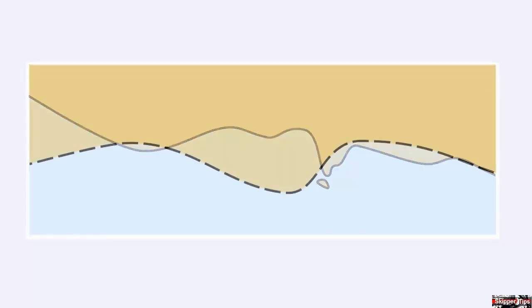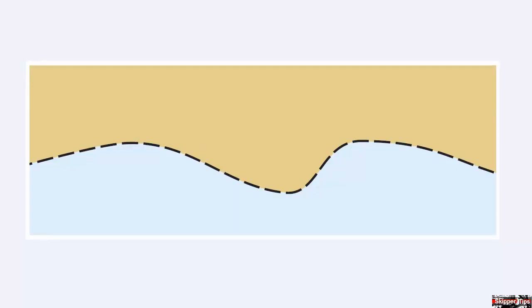An unsurveyed coastline shows as a dashed line and you want to stay well clear of an unsurveyed coastline.